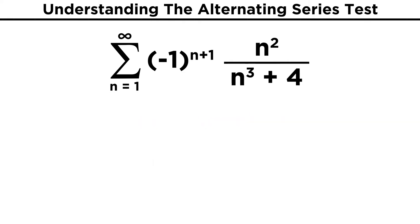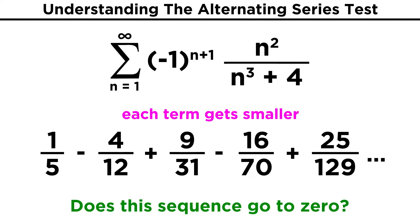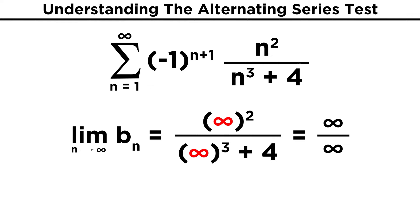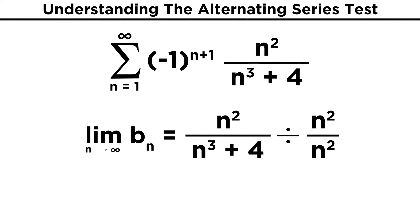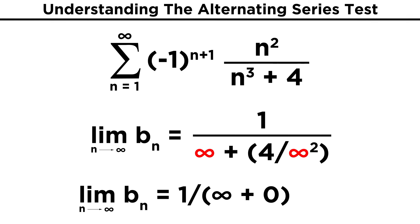How about this one, with negative one to the n plus one times n squared over the quantity n cubed plus four. With a higher power of n in the denominator, we can be sure that each term in the series is getting smaller. Does it go to zero in the limit of infinity? Well, just plugging in infinity, we get infinity over infinity, so let's divide top and bottom by n squared. That gives us one over the quantity n plus four over n squared. Now, plugging in infinity, we get one over the quantity infinity plus zero, or one over infinity, which is zero. Both criteria are met, and this series converges.